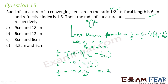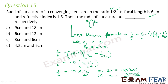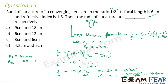Solving: 1/6 = 1.5/(2x), so 2x = 0.5 × 3 × 6, giving x = 0.5 × 3 × 6 / 2 = 4.5 centimeters. Therefore R₁ = 4.5 centimeters and R₂ = 2 × 4.5 = 9 centimeters. The correct option is D.